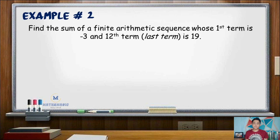Another example: find the sum of the finite arithmetic sequence whose first term is negative 3 and twelfth term is 19. For this item, since it is a finite sequence, all we need to do is to get the sum of the first term up to the twelfth term. The first term is negative 3, the twelfth term is positive 19, and n is positive 12.